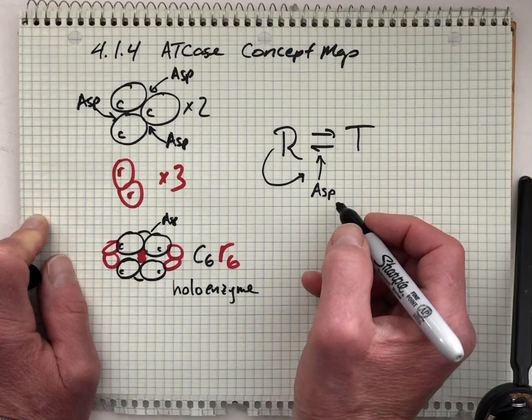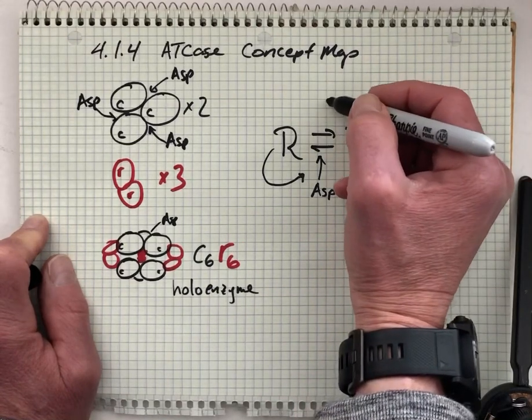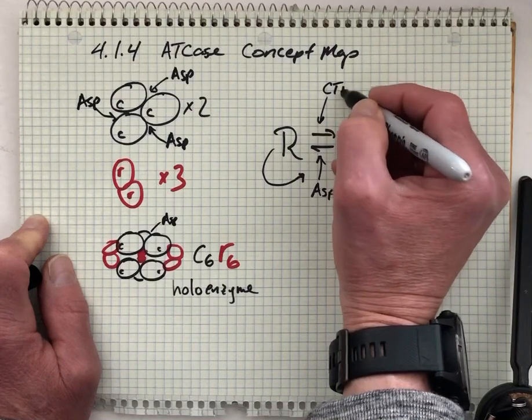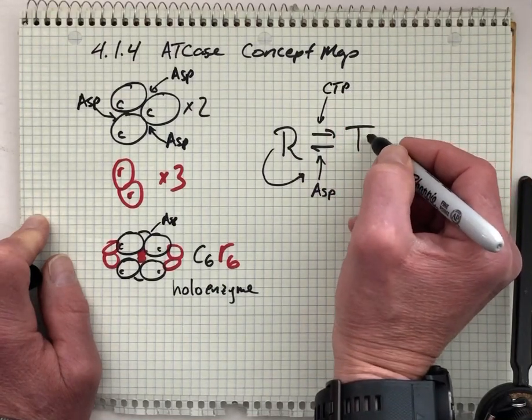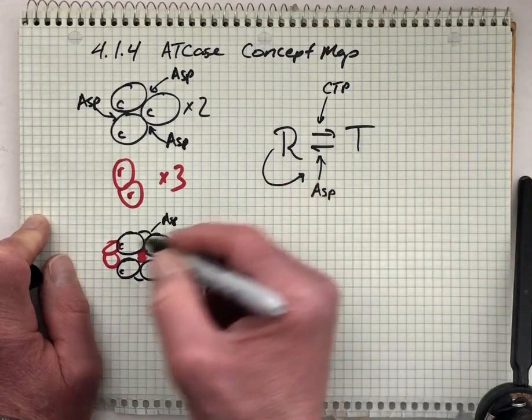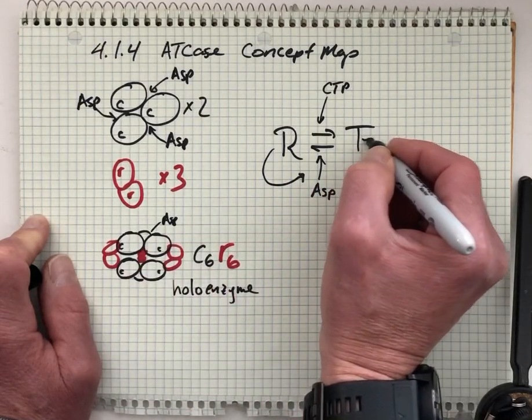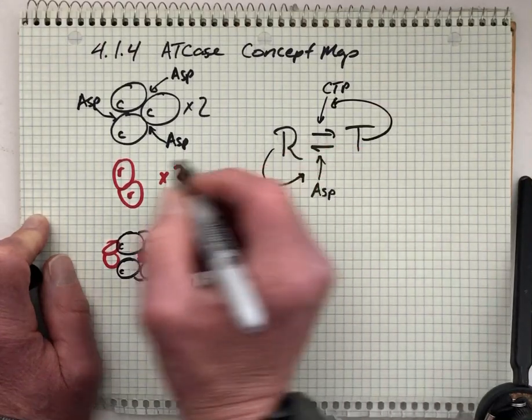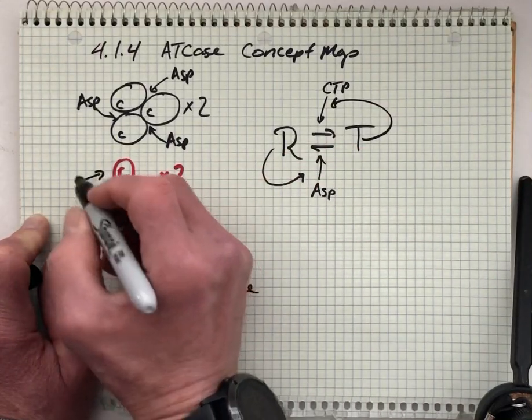Now for the nucleotides, the tense form is stabilized by binding the nucleotide CTP. And the tense structure, this closed form of the holoenzyme, encourages the binding of additional CTP units, and those are binding at the regulatory subunits.